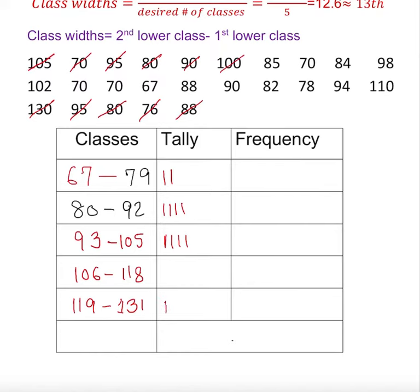130 is the last one. 102 is the third one, but there are already four, so I put a diagonal here, which means five in Roman numerals. 70 is on the first one again. 67 is also on the first one, so I do diagonal. 88, I need a diagonal here. 90, I need one more here. 82 is second one, 78 is second one, 84 is second one, 94 is third one, 110 is fourth one, 85 is second one, 70 on the first one, 84 is second one, 98 is there.